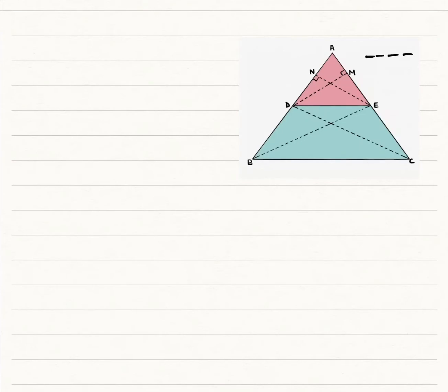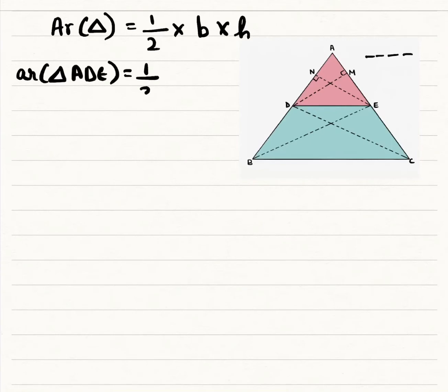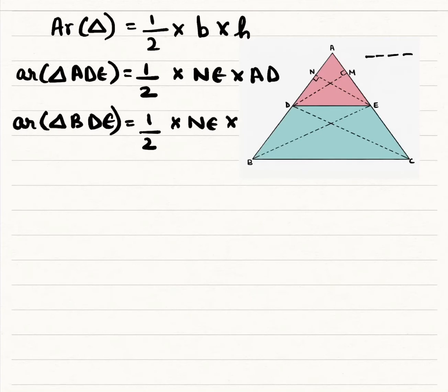Now, the main proof begins with our regular area formula for triangles: half times base times height. So area of triangle ADE is equal to half times NE times AD. Area of triangle BDE is equal to half times NE times BD.